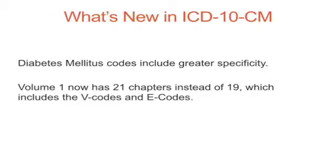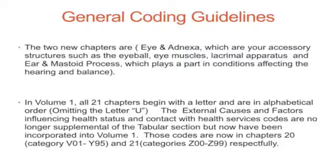Volume 1 now has 21 chapters instead of 19, which includes the V codes and E codes. The two new chapters are eye and adnexa — which are your accessory structures such as the eyeball, eye muscles, and lacrimal apparatus — and ear and mastoid process, which plays a part in conditions affecting hearing and balance. In Volume 1, all 21 chapters begin with a letter and are in alphabetical order, omitting the letter U. The external causes and factors influencing health status and contact with health services codes are no longer supplemental to the tabular section, but have been incorporated into Volume 1, now in Chapters 20 and 21 respectively.